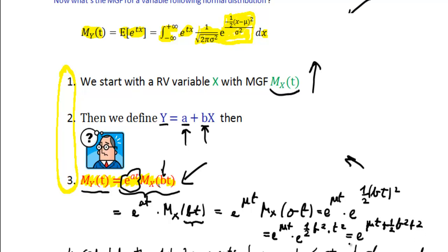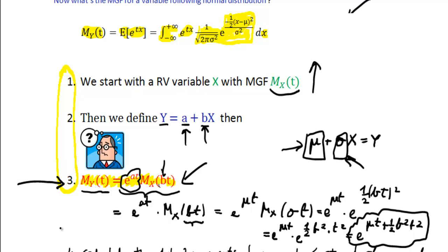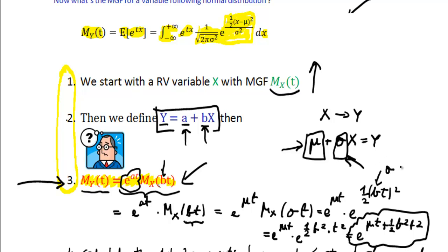And there we have it — our moment generating function for the normal variable, derived in less than one minute using the key property of moment generating functions. To be precise, replacing B with σ, the final result is e^(μt + ½σ²t²).